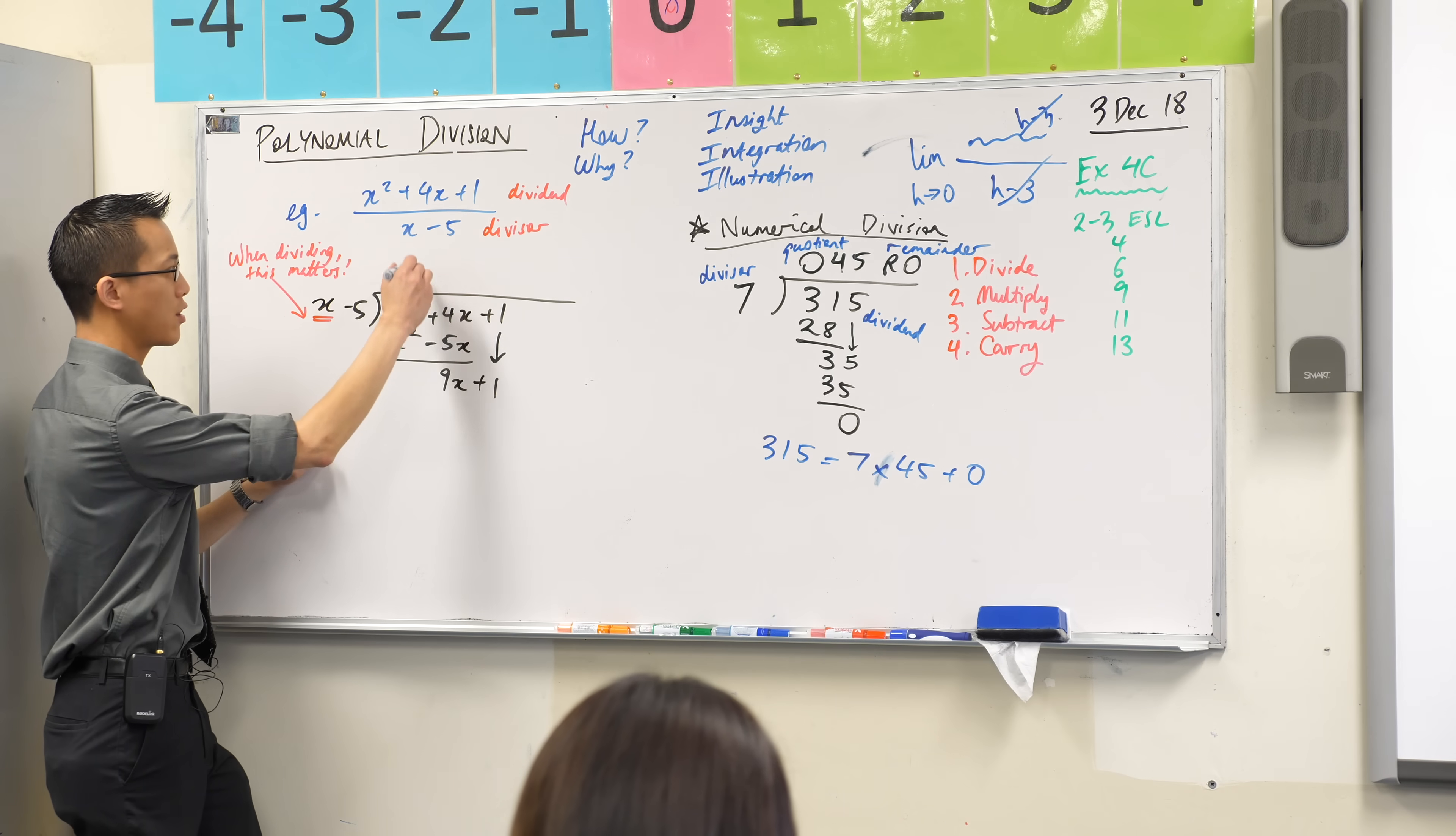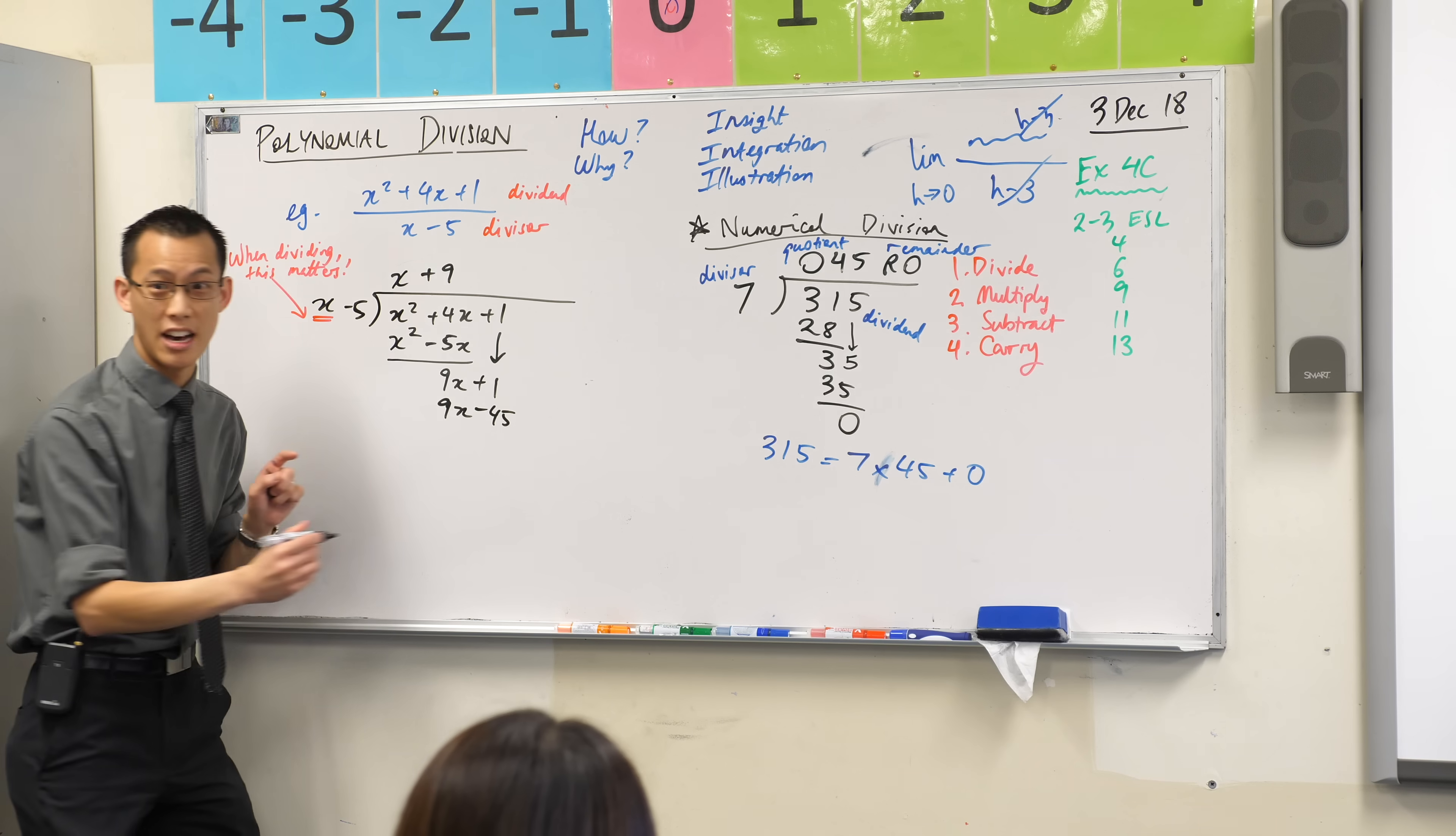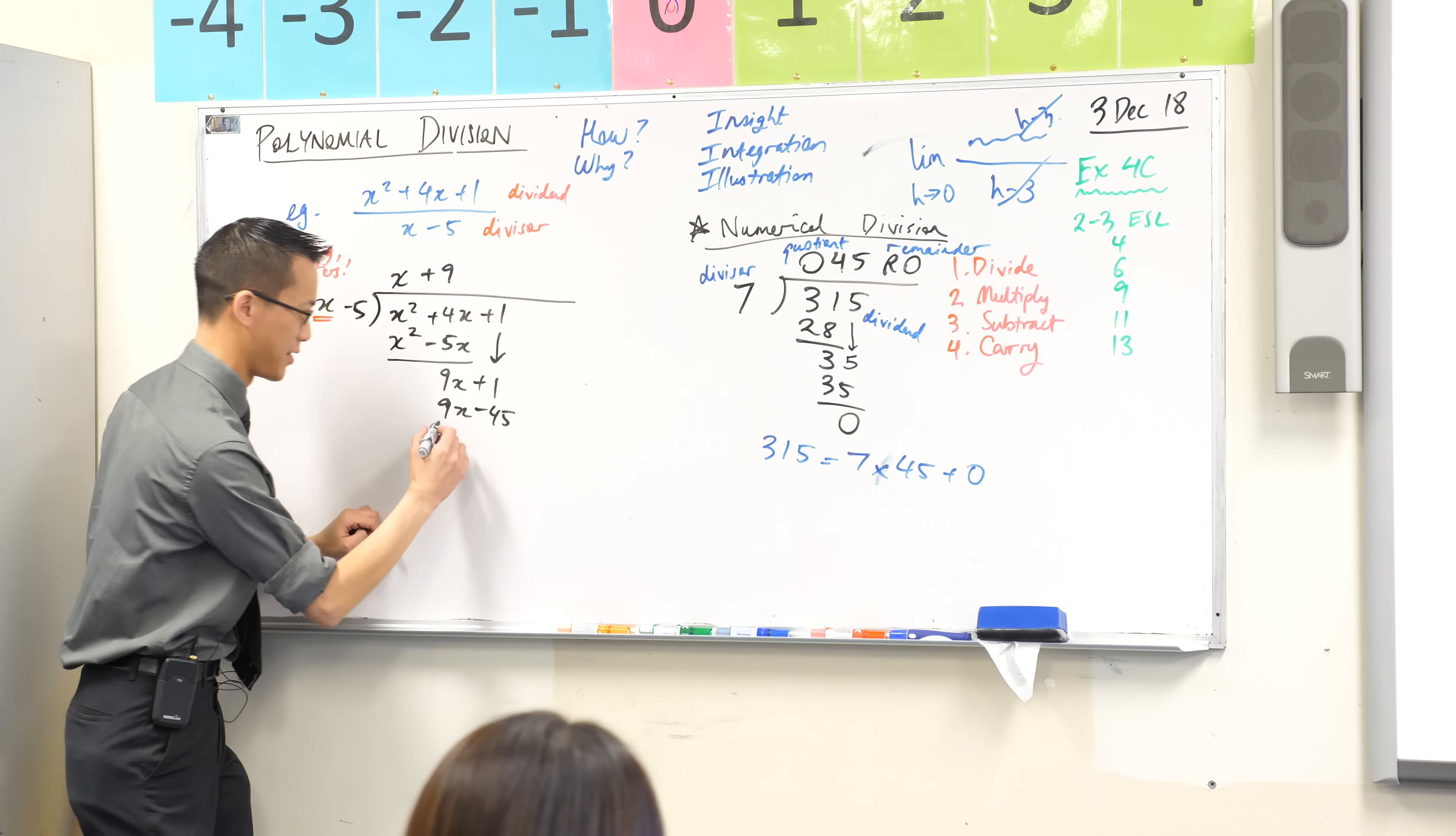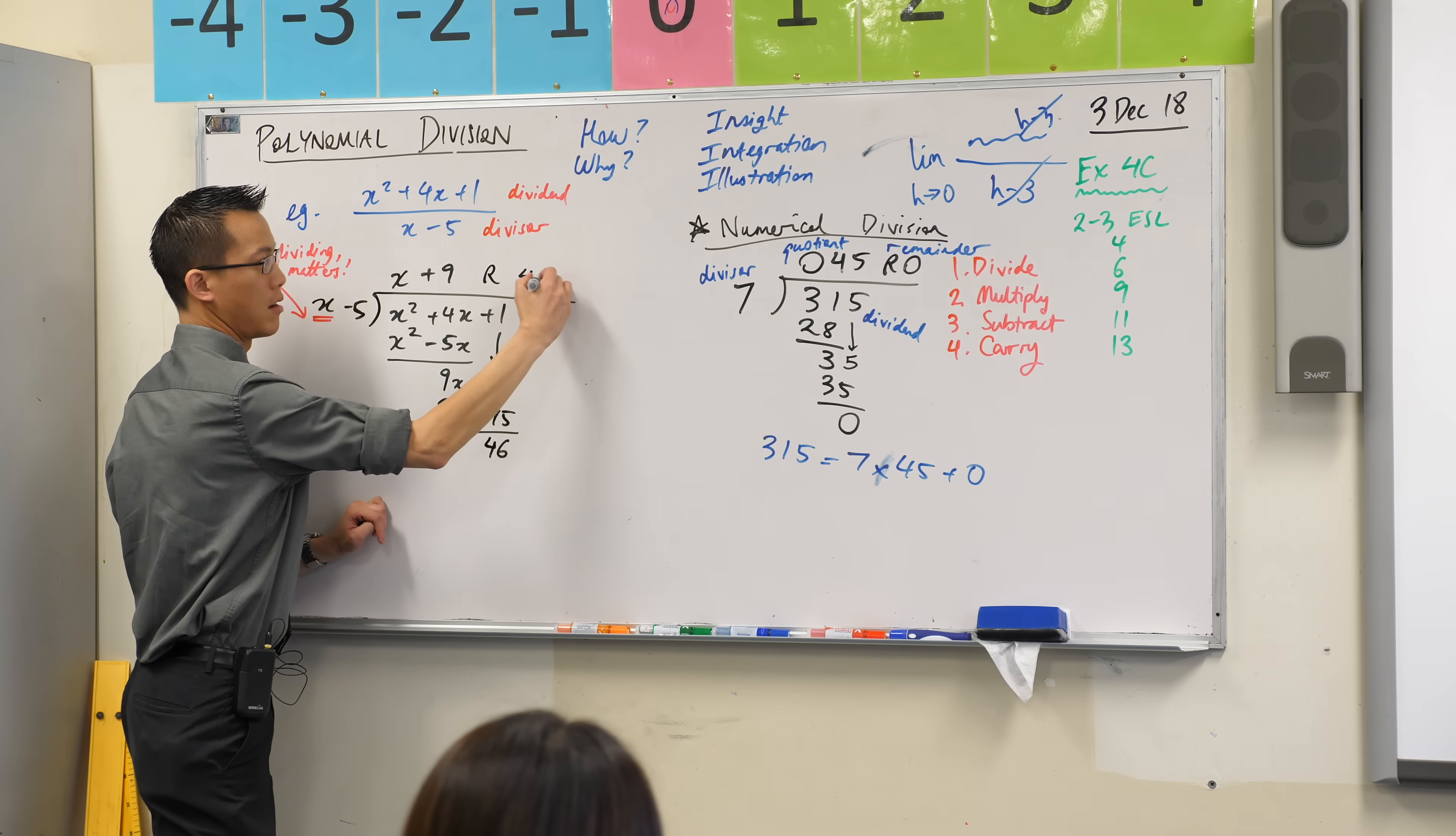So where does the 9 go? Up here. Multiplied, that's going to be 9x. 9 times negative 5, minus 45. How many numbers so far? You okay? I'm up to subtract. 1 take away negative 45? 46. It's early but not that early. I'm at the end there to carry forward but I don't have any more things to carry. So what does that mean? Where am I at? This is finished. This is remainder. Remainder, 46.